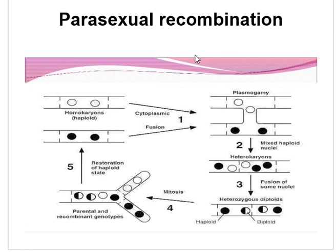In parasexual recombination, nuclear material comes from two different sources. The parasexual cycle is defined as the cycle in which plasmogamy, karyogamy, and meiosis (that is, haploidization) take place, but not at a specified time or specified point in the life cycle of an organism. Generally, the parasexual cycle occurs in those fungi in which the true sexual cycle does not take place — members of the class Deuteromycetes, in which the sexual cycle does not occur except through the parasexual cycle.